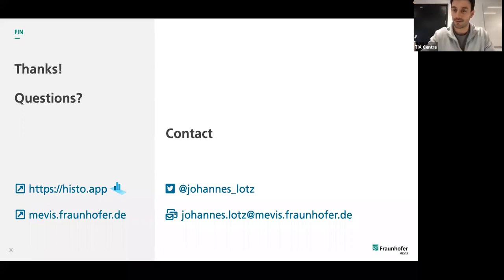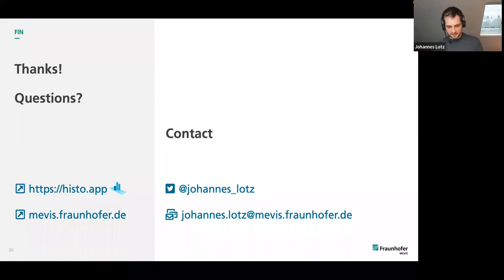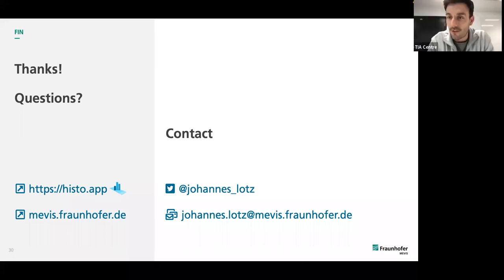A question about automatically quantifying registration quality or slides that could not be registered: you can look at the image distance and deformation energy after registration, but I haven't found a conclusive threshold for when to say it doesn't work. Foldings in the tissue are often a sign that something went wrong. Having a traffic light approach — red when something didn't work and someone has to review it — would be very desirable, but I'm not aware of something that works robustly for this.